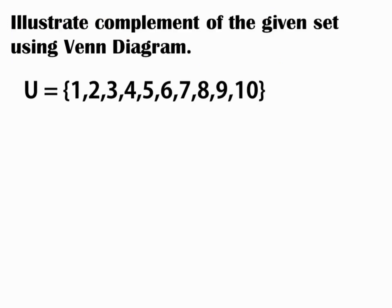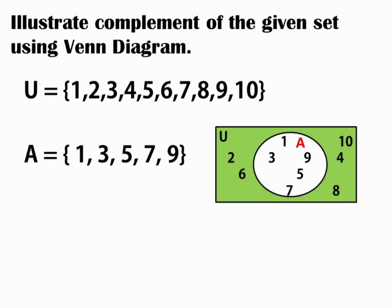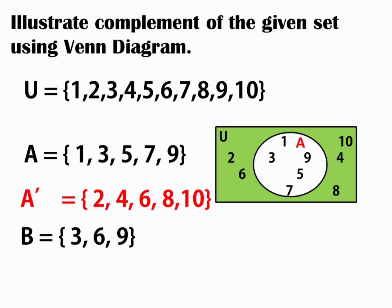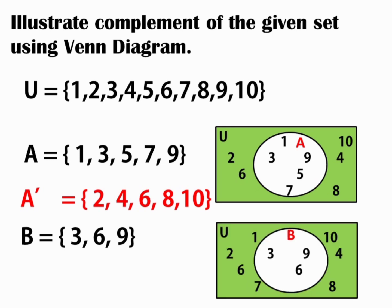Now, let's check. U is equal to 1, 2, 3, 4, 5, 6, 7, 8, 9, 10 and A is equal to 1, 3, 5, 7, 9. Using the Venn diagram representation, A complement is equal to 2, 4, 6, 8, 10. Very good. And how about the B complement? We're going to use again U equal to 1 to 10. B is equal to 3, 6, 9. Using the Venn diagram, the shaded region will be your answer. The B complement is equal to 1, 2, 4, 5, 7, 8, and 10.